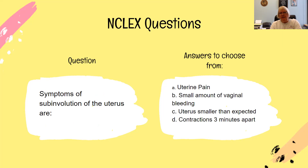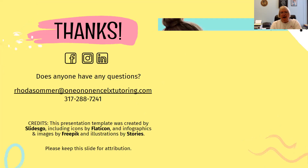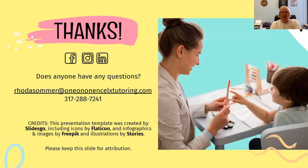The symptom choices are: uterine pain, small amount of vaginal bleeding, uterus smaller than expected, and contractions three minutes apart. The answer is uterine pain. I hope this has helped you in your learning about subinvolution.